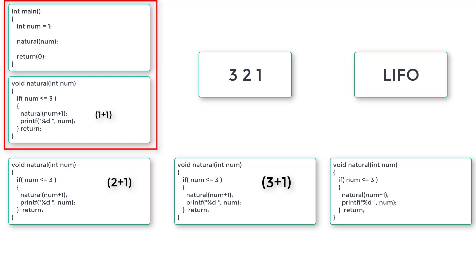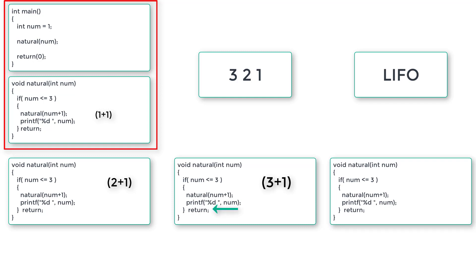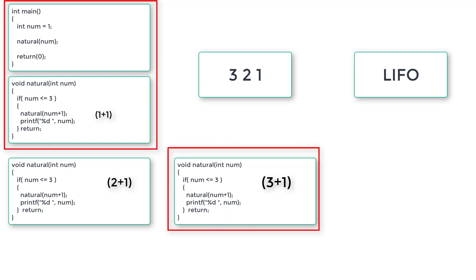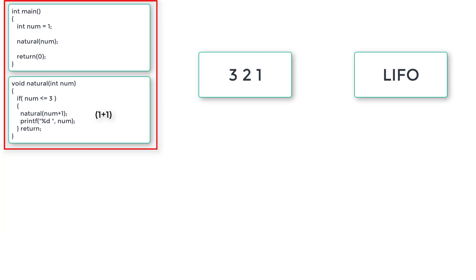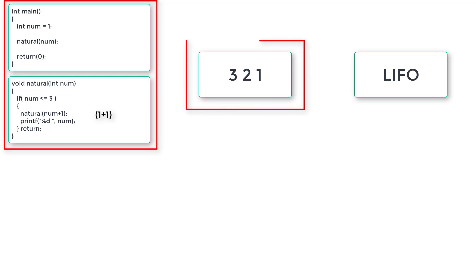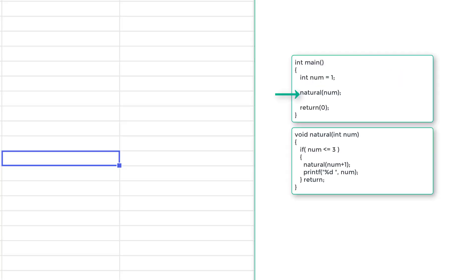Finally the control shifts to the calling function, which is main. Once return is executed, the instance gets popped out of the stack — that is, gets deleted. The control shifts to the calling function and each instance gets popped out of the stack. This happens for all instances including the main function — once return is executed, these instances and the memory associated with them get popped out or deleted from the stack. Only the output remains on your console window.